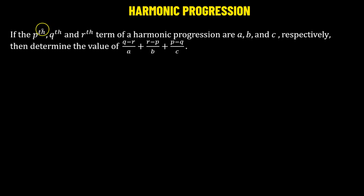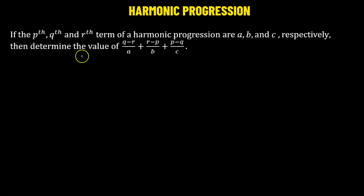In this problem, the p-th, q-th, and r-th terms of a harmonic progression are given. They have the values a, b, and c respectively. We need to determine the value of the given expression.